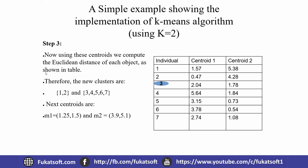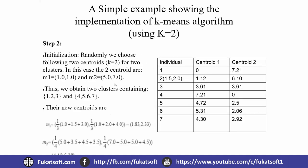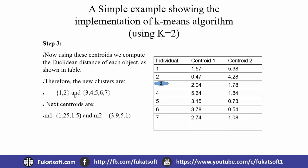The Euclidean distance of each object is computed as shown in the table. After the first iteration, we check how much the distances change — for example, elements 1 and 2 in one cluster and element 3 checked against the other. After checking, the distance is found to be the same.